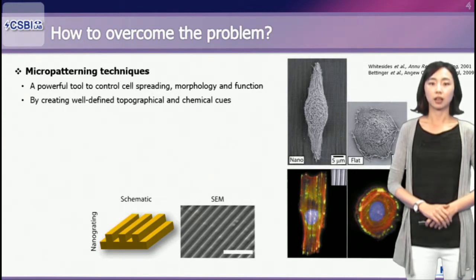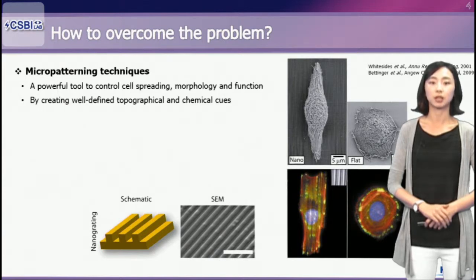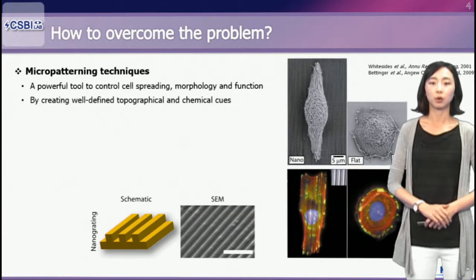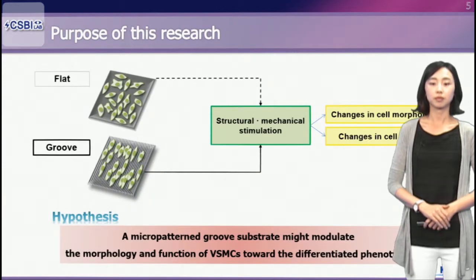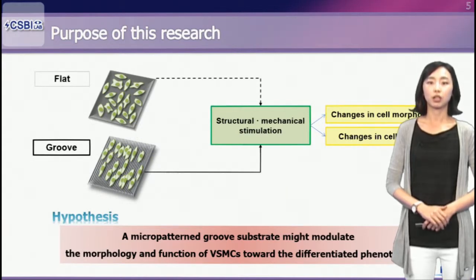We postulated that cell morphology and organization may regulate differentiation of VSMCs and subsequent function. We then introduced micropatterning to induce differentiated VSMC phenotype. Micropatterning techniques have been used as a powerful tool to control cell spreading, morphology, and function by creating well-defined topographical and chemical cues for cell patterning. Topography can also influence cellular responses from initial attachment and migration to differentiation. In this research, we introduced a microgroove substrate as structural and mechanical stimulation for modulation of morphology and function of VSMCs to induce and maintain the differentiated VSMC phenotype in vitro.